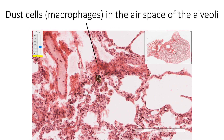A third type of cell is also found in the respiratory zone: dust cells, or macrophages, found in the air space of alveoli as shown here, and also in the connective tissue of the interalveolar septa. These cells phagocytose inhaled dust particles — hence named dust cells. They also phagocytose red blood cells from capillaries in congestive cardiac failure, resulting in rusty sputum, and are therefore also called heart failure cells.